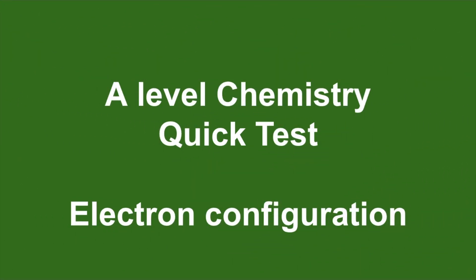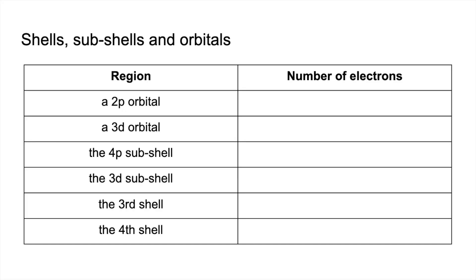A-level chemistry, quick test video on electron configuration. So there's a couple of tasks to do. It's the first one, so we've got to complete the table and put in the maximum number of electrons that can fit into these different regions. So if you want to have a go at that, pause the video and then play on when you're ready.